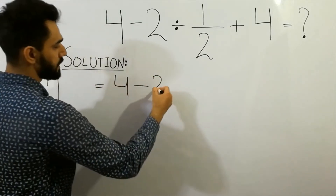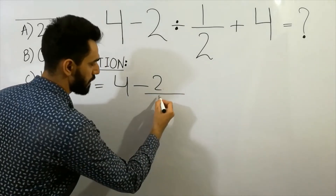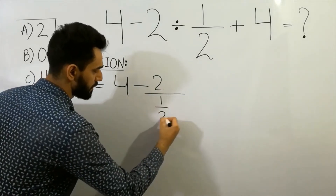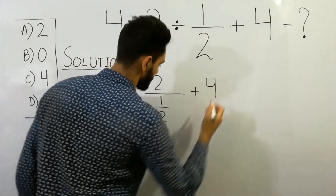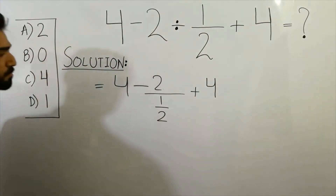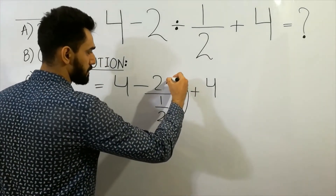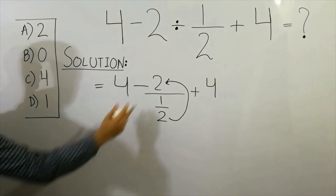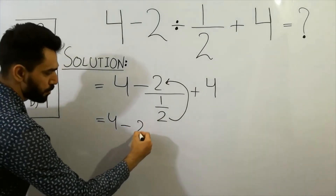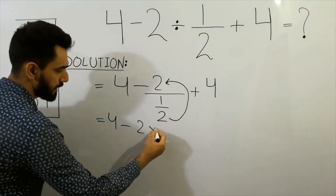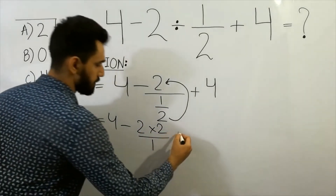Next question: four minus one-half. The division sign means you write divided by one over two. Then we combine — bringing the denominator of the numerator up: four minus two multiplied by two, divided by one. That's the first step.